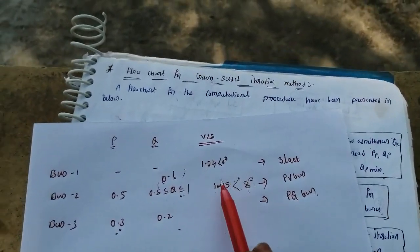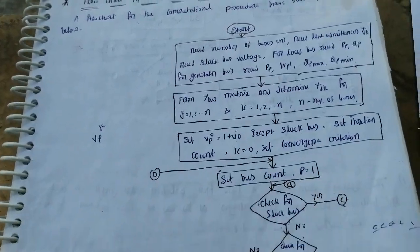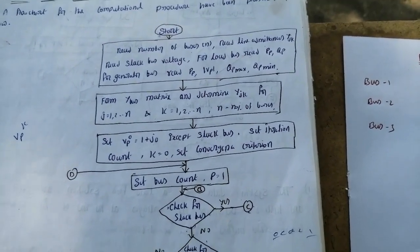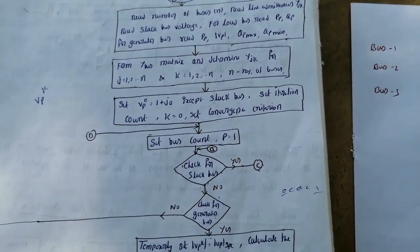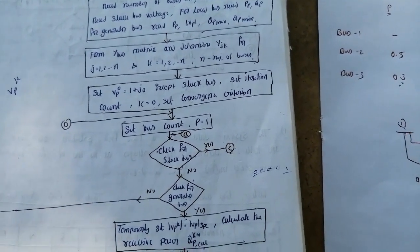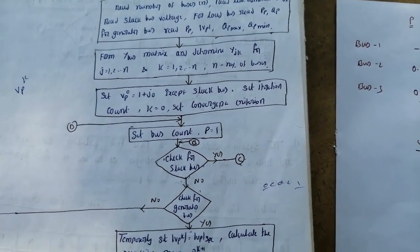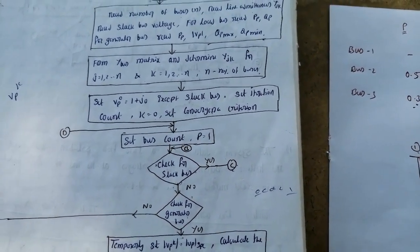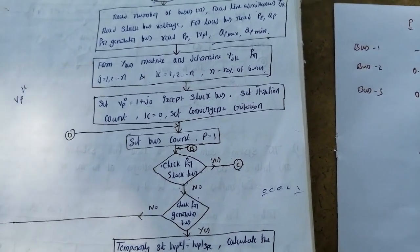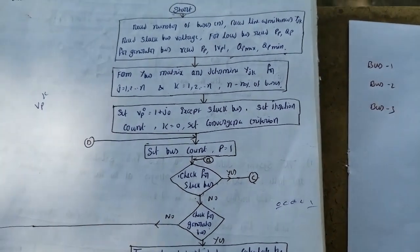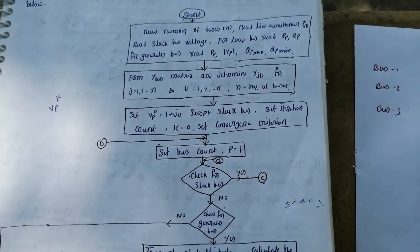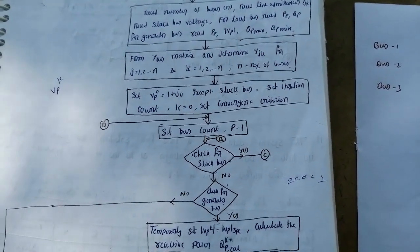After setting the flat voltage profile, set the iteration count. Then set bus count p = 1. We now start processing bus 1, bus 2, bus 3, and so on. The variable p represents the bus number count. When p = 1, you first examine what type of bus 1 is. Check: is bus 1 a slack bus or not? If it is a slack bus, go to link C in the flowchart.